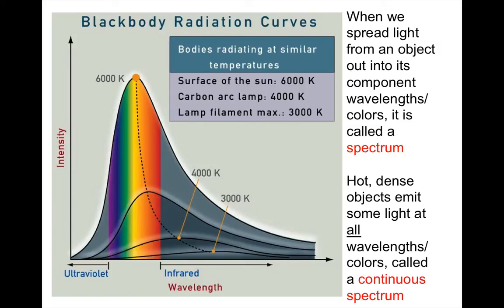That 6000 Kelvin black body is actually pretty similar to our sun — its peak spans right in the middle of the visible wavelength regime, just like our sun. Our sun gives off more light in visible wavelengths than at any other wavelengths, and that's actually exactly why we see visible light and not infrared or ultraviolet. These thermal emission spectra are emitted by hot, dense objects. Any object greater than absolute zero will emit a black body emission spectrum. The hotter they are, the shorter the wavelength of the peak of their spectrum.